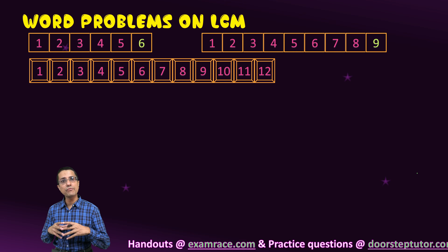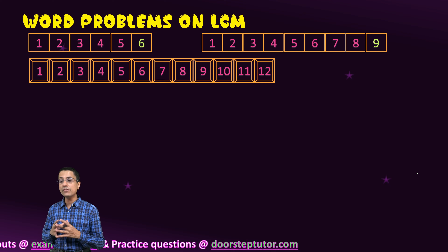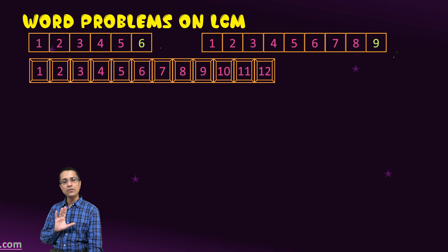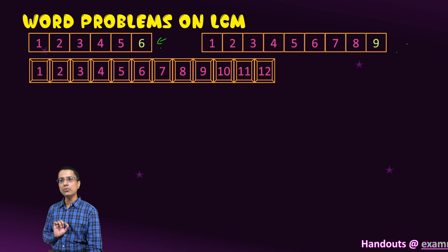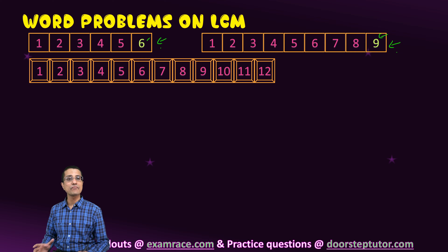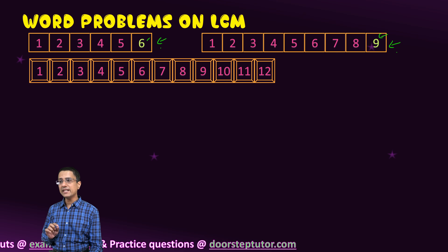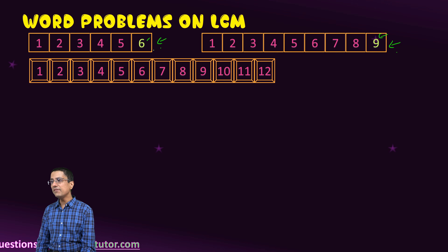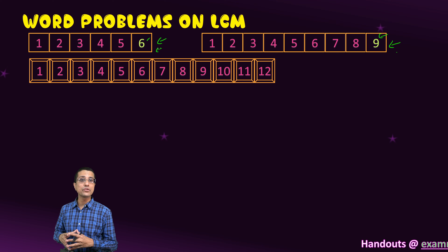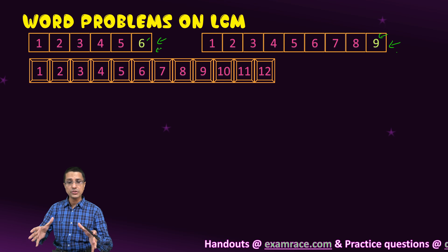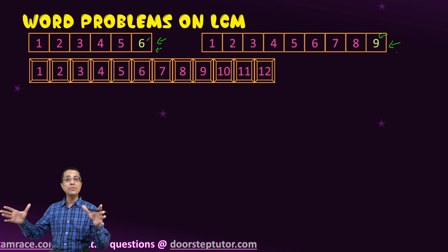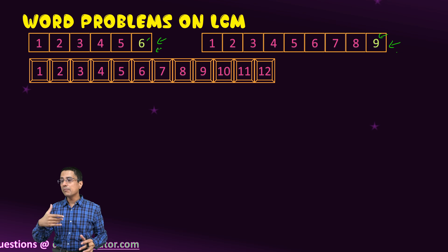Now let us see what typical word problems for LCM look like. Suppose we are given two measuring tapes — one of length 6 and one of length 9. We will be asked to create the smallest wall which would be evenly measurable by both tapes. In the case of HCF, we had to create the largest possible length of the scale — largest was the keyword there. Here, smallest or minimum is the keyword: the minimum possible length of the wall that is evenly measurable by both tapes.